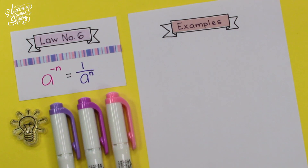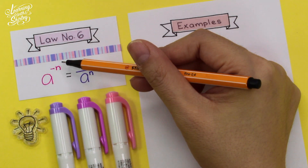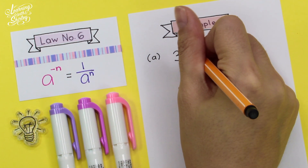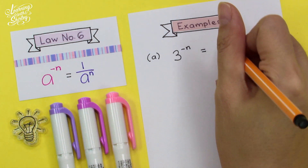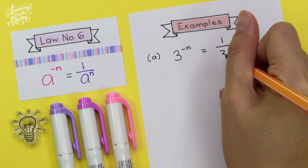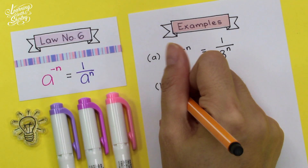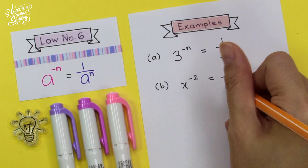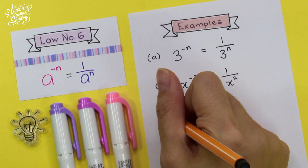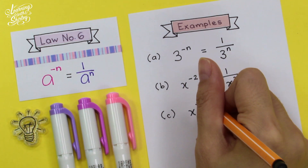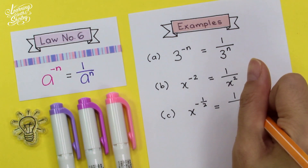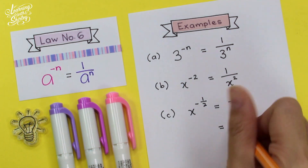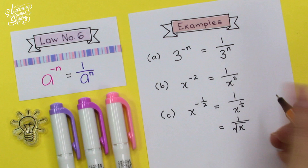For law number 6: a number with a negative index can be expressed as a to the power negative n equals 1 over a to the power n. For example, 3 to the power negative n equals 1 over 3 to the power n. If it's x to the power negative 2, it equals 1 over x squared. And x to the power negative half equals 1 over x to the power half — since x to the power half is the square root of x, the answer is 1 over the square root of x.